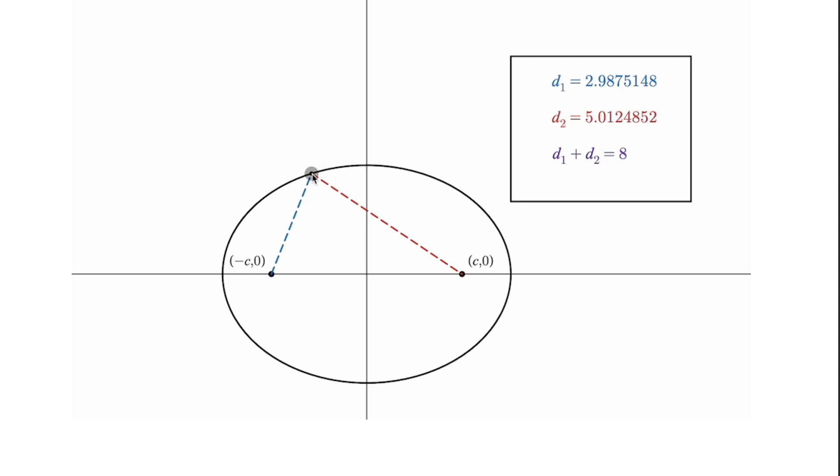The distance from this point to the other focus is 5.012. The sum of those distances is 8, and anywhere we go on this ellipse, that always holds true.